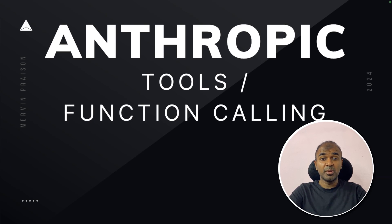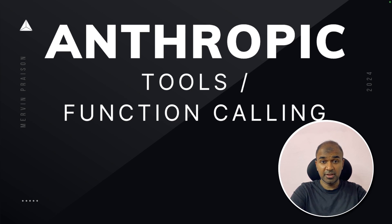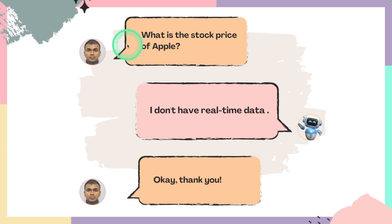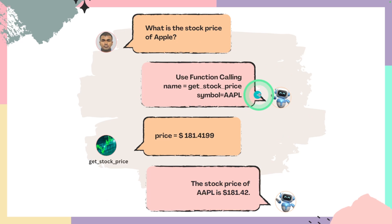This is amazing — we now have Anthropic tools, or function calling. This is an updated version, so I might repeat some things, but purely for beginners or first-time viewers. What is the use of tool calls or function calling in Anthropic? When we ask a question like 'What's the stock price of Apple?' it responds saying it doesn't have real-time data. So how can we fix this? That's when tool calling comes in.